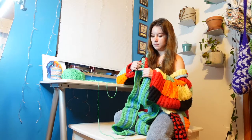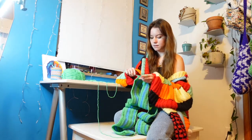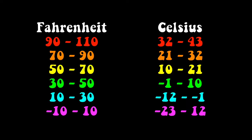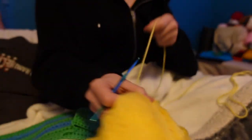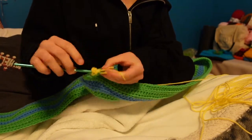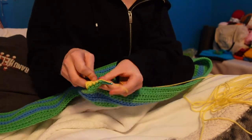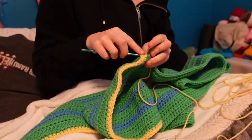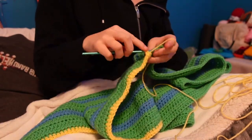I'll put my temperature key on the screen. From 90 to 110 degrees Fahrenheit is red. From 70 to 90 is orange. From 50 to 70, I'm using yellow. 30 to 50 is green. 10 to 30 is blue. And from negative 10 degrees to 10 degrees is purple.